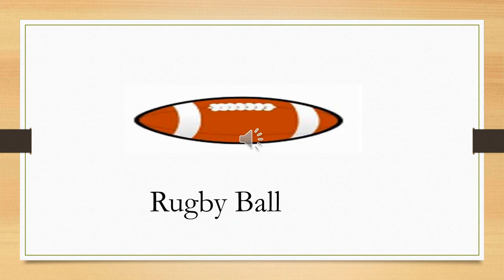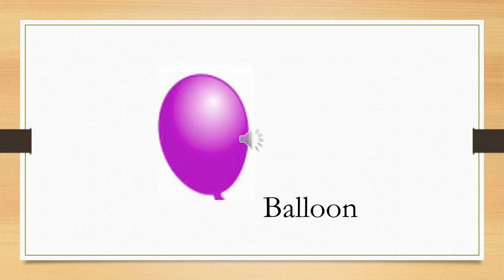Now, this is a playing ball — it is called a rugby ball. And this rugby ball is also oval in shape. What is the shape of the rugby ball? Oval. Moving on — we love to play with this — a balloon! A balloon is also oval in shape.